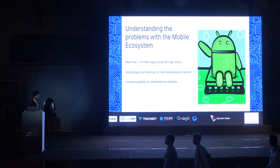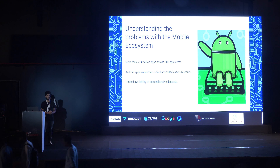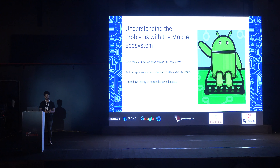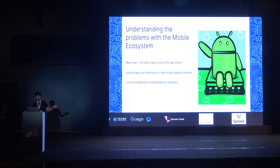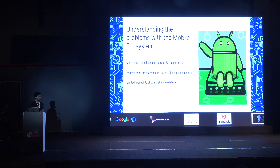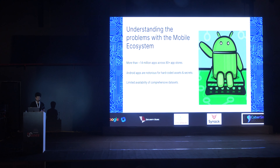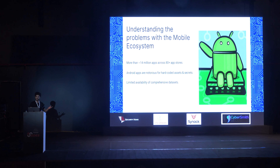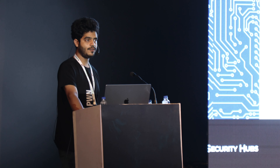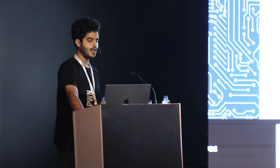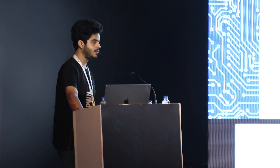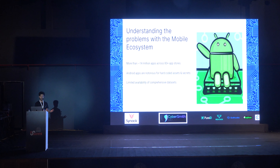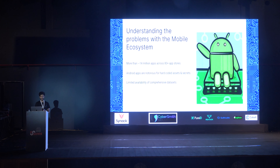Now let's look at some of the problems we saw in the current mobile ecosystem. The biggest problem is the huge number of Android applications out there. According to our report, we have more than 14 million applications spread across 80-plus app stores and growing every day. Most of these applications have never passed through a security test. We also have mobile-only startups — unicorn startups — which offer most functionality through a mobile application and don't have a web application at all.